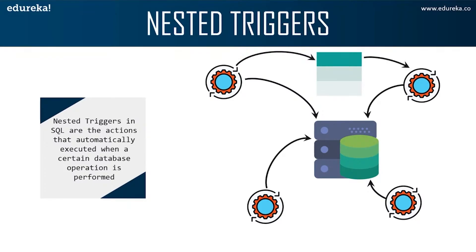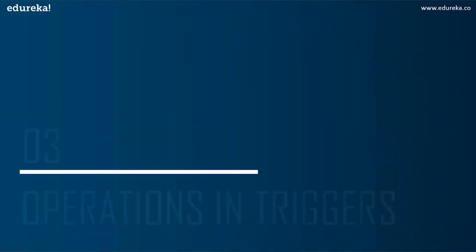You might be wondering in which scenario we can use a nested trigger. Continuing from the earlier scenario, Anna sent an email for every new customer added to the company's database. Now, what if she wishes to keep track of the number of customers to whom the email was sent? Anna would need to create a nested trigger to keep track of the count along with sending an email. Let's now try to implement an example of trigger in SQL.